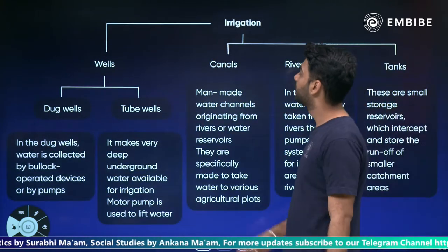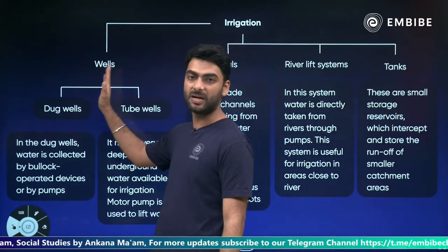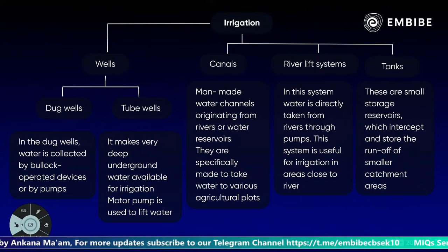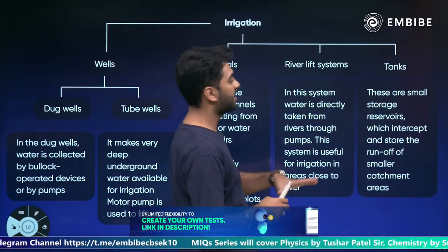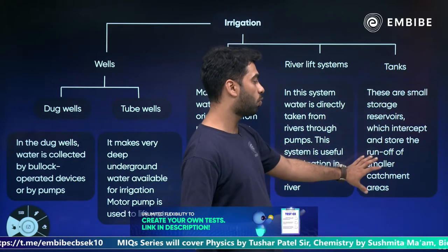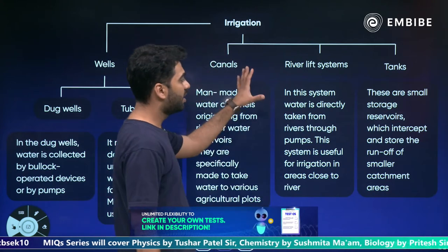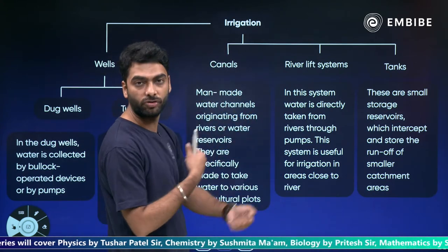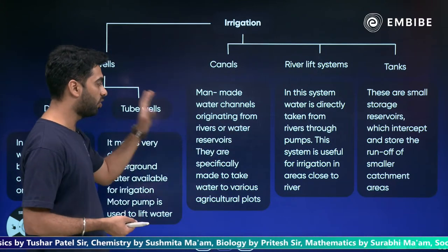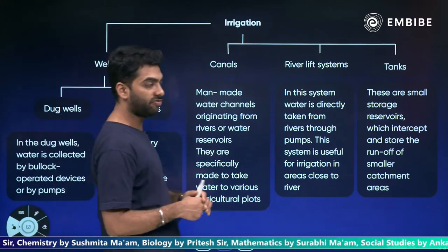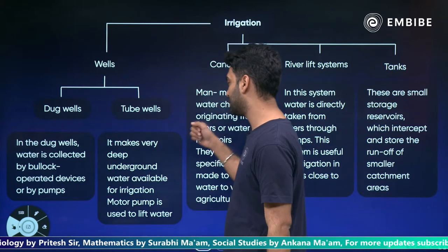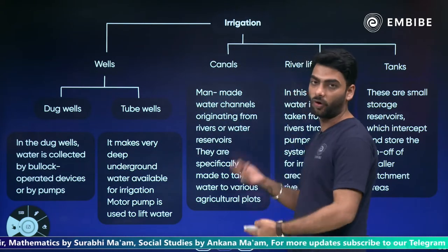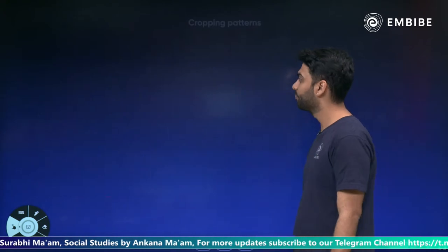Irrigation methods — traditional: moat, dhekli, rahat, and chain pump. Modern: sprinkler and drip irrigation. Tanks are small storage reservoirs that intercept runoff water. River lift systems draw water from rivers through pumps. Canals are man-made water channels. Wells include dug wells run by bullock-operated devices or pumps, and tube wells where water is lifted through a pump.